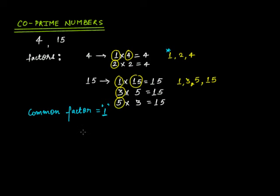Do we have some other examples? Yes, we have some other examples as well. You can take 3 and then you can take 7. So if you go for 3, then 3 has a factor 1 times 3. So it has 2 factors, 1 and 3.